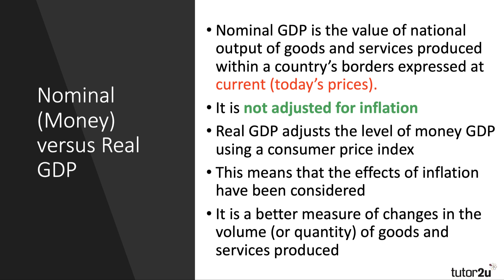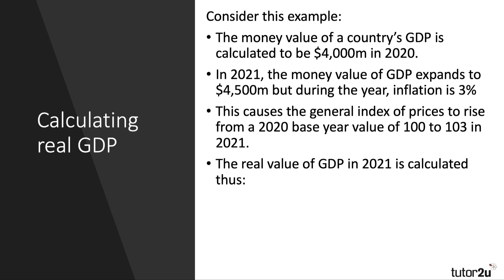Real GDP adjusts the level of spending, output, and income using a consumer price index. That means if you get the data in real terms, the effects of inflation have been considered, and it's normally seen as a better guide to changes in the volume or quantity of goods and services that have been produced.